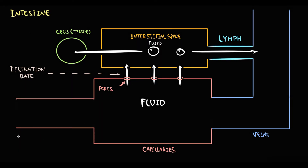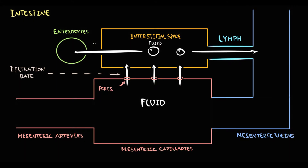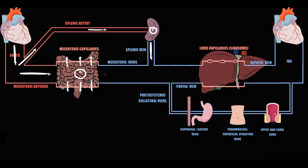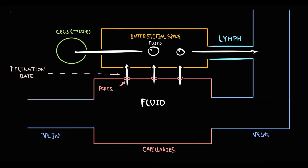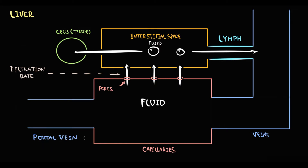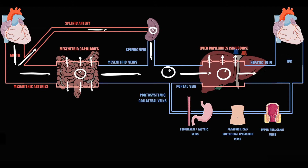In the case of the intestine, mesenteric arteries deliver blood to mesenteric capillaries, and mesenteric veins provide outflow. The cells composing intestinal tissue are called enterocytes. Then blood from the spleen via the splenic vein and from the intestine via mesenteric veins is delivered to the portal vein. The portal vein drains blood into the liver, where in liver capillaries — called sinusoids — fluid exchange occurs. The vessel delivering blood is the portal vein, sinusoids are the capillaries, the hepatic vein provides outflow, and cells composing liver tissue are called hepatocytes. After fluid exchange, blood goes to the hepatic vein and then to the inferior vena cava.